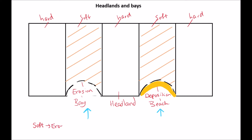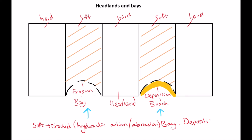To recap, soft rock is eroded through hydraulic action and abrasion. This leads to the formation of a bay. If the conditions are correct, deposition will occur and a beach will be created. In comparison, hard rock will not erode as easily, leading to the formation of a headland.